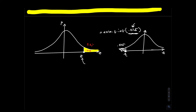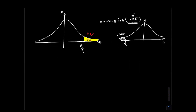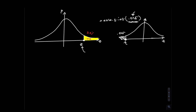Every time you're finding a z-value, the area you type into Excel must be the area to the left of that number, not to the right. In the previous example the area to the left was given as 0.05, so you just typed 0.05. But here the area to the right is given, so when using the NORM.S.INV command, you must type the area to the left, which is 97.5% or 0.9750. Excel will then spit out the answer: rounded to two decimal places, that's 1.96.